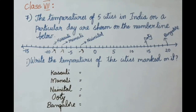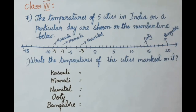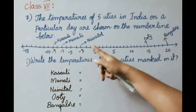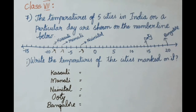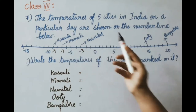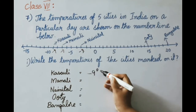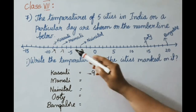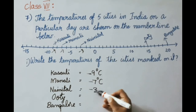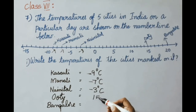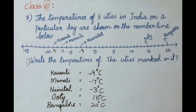See the seventh sum. The temperatures of 5 cities in India on a particular day are shown on the number line: Kazoli, Manali, Nanital, Uti, and Bangalore. For the first question — write the temperatures of the cities — Kazoli is minus 9 degrees Celsius, Manali is minus 7 degrees Celsius, Nanital is minus 3 degrees Celsius, Uti is 15 degrees Celsius, and Bangalore is 20 degrees Celsius.